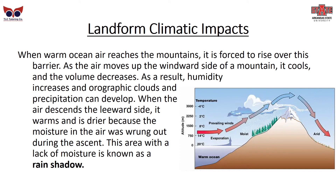Beyond climate zones, specific landforms can also impact climate. When warm ocean air hits a mountain, it's forced to go up over the barrier. As the air moves up the windward side of the mountain, it cools and its volume decreases. As a result, humidity increases and orographic clouds and precipitation can develop. When the air descends on the leeward side, it is warm and dry because the moisture was wrung out during the ascent. This area will have a lack of moisture and is known as a rain shadow.